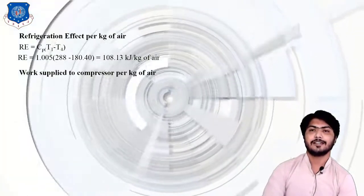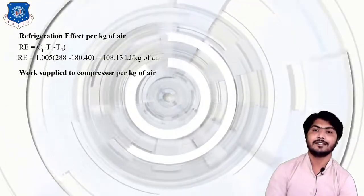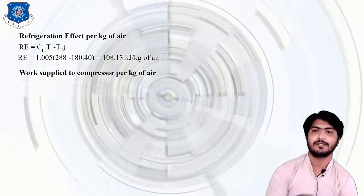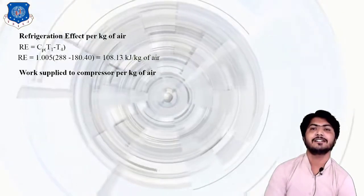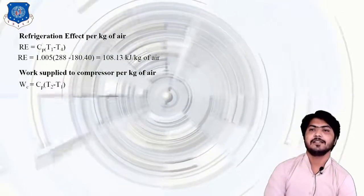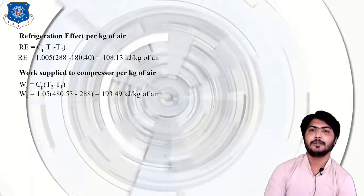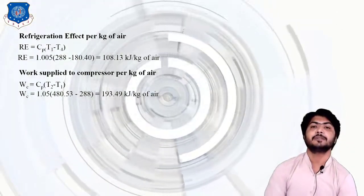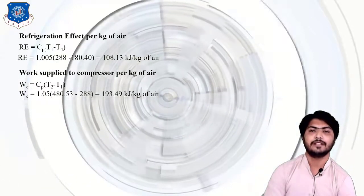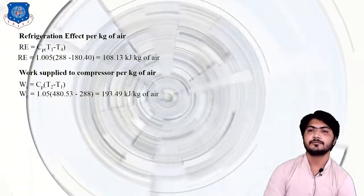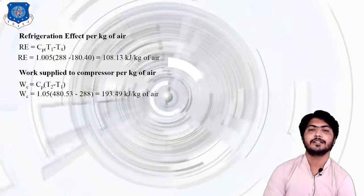Next we calculate the work supplied to the compressor per kg of air. Using the steady flow energy equation for the compressor: Wc = CP × (T2 − T1). With CP = 1.005, T2 = 480.53 K, and T1 = 286 K, we obtain the compressor work = 193.49 kJ/kg of air.